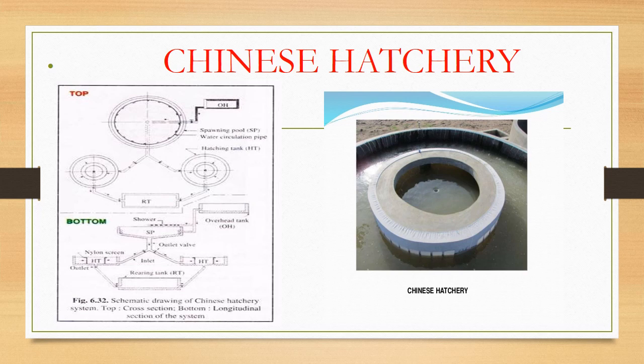Disadvantages of Chinese hatchery are: the initial cost of setup is very high, proper technical application must be maintained regarding fitting of pipes, direction, and amount of water flow. Due to the absence of a proper spawnery, total removal of shells, unhatched eggs, and dead spawn and larvae is not possible.